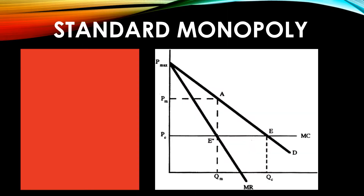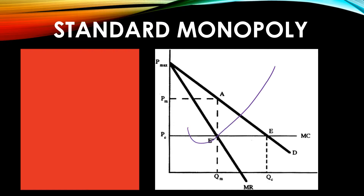Let's look at the standard textbook graph of a monopoly situation. Here we're going to assume constant marginal costs, though this won't always be the case. We will look at other graphs where marginal cost curves are different than constant returns — it could be our standard upward sloping curve. But here we're doing the simplest model to introduce the graph.